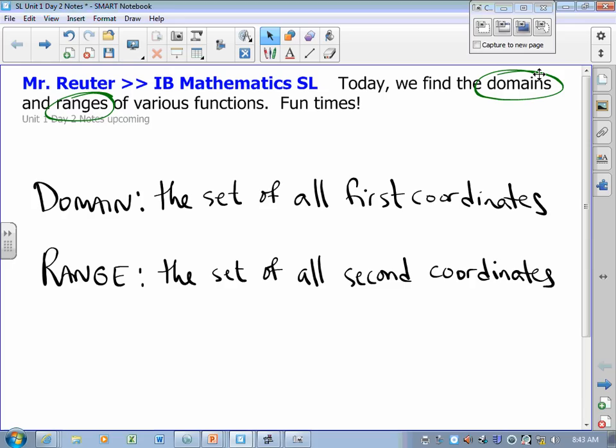If you remember from Algebra 2, the first coordinates are traditionally the x's. They don't have to be x's—they could be time values, height values, letters, whatever. But the first coordinates are your inputs, your domain.